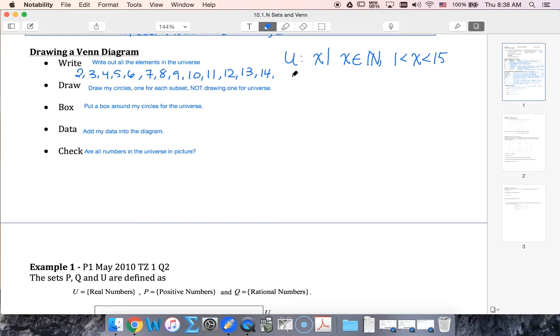So now let's say that my subsets are A which are the multiples of 4, and B are the factors of 36.